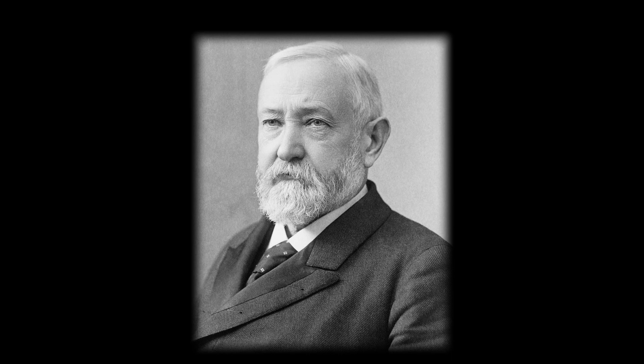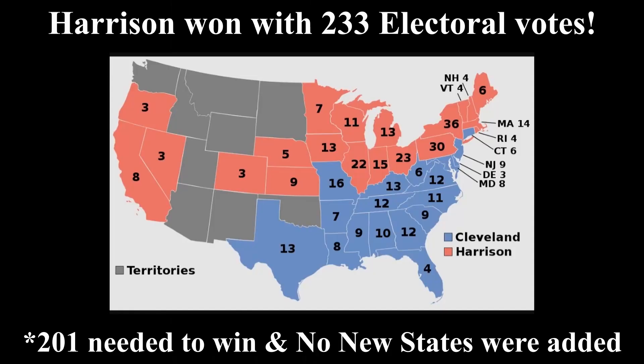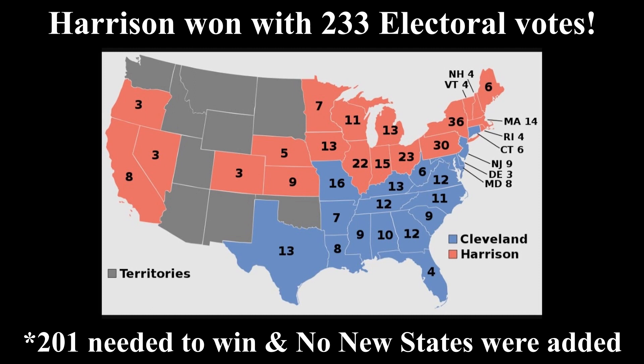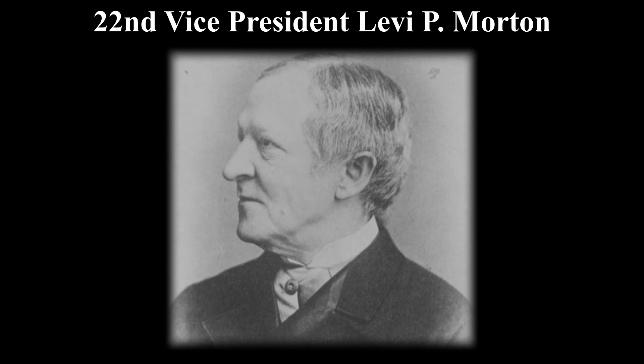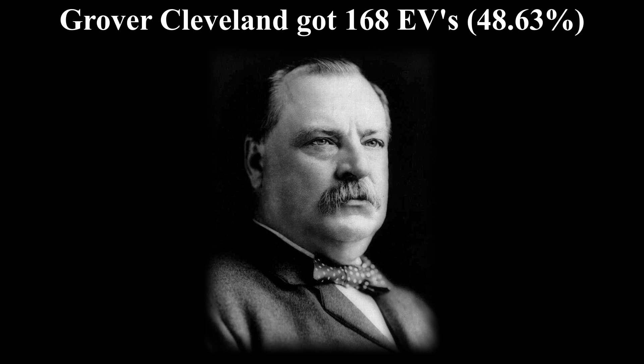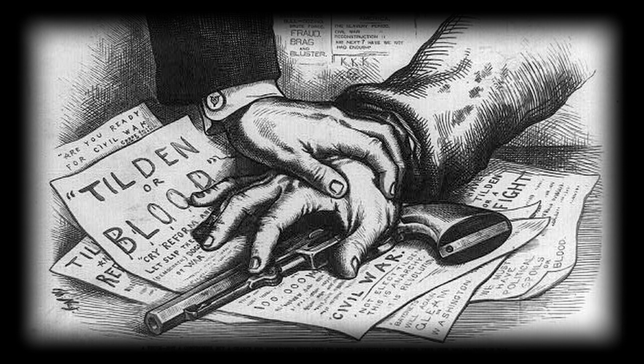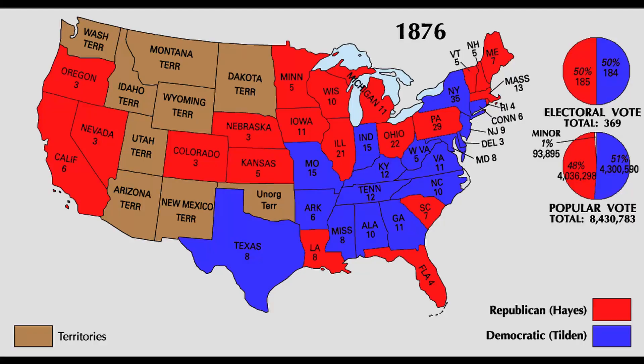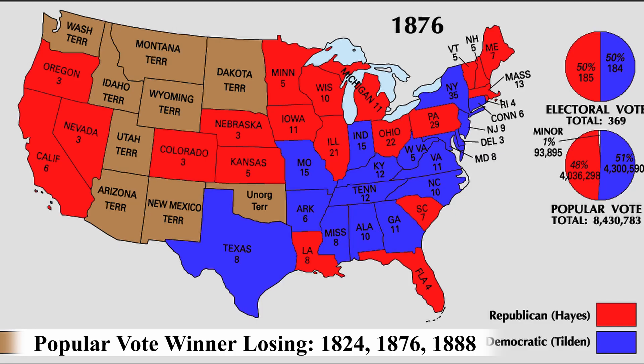Benjamin Harrison won, becoming the 23rd president in American history, with 233 electoral votes but only 47.80% of the popular vote. Levi P. Morton became the 22nd vice president. Grover Cleveland got 168 electoral votes but won 48.63% of the popular vote, meaning Cleveland actually won the popular vote but still lost. This became similar to the election of 1876, where the candidate lost even after getting the most votes.